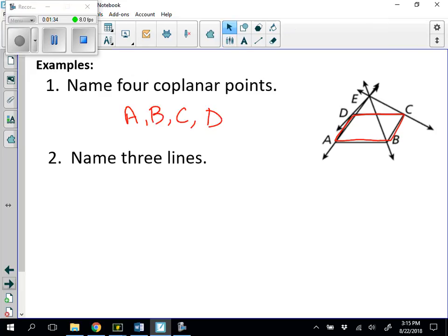Now naming three lines, I'm going to focus on the lines that are shown with the arrowheads. So there are actually four lines, and one line would be line AE. So make sure you draw it correctly with the arrowhead above it. You could also write EA.